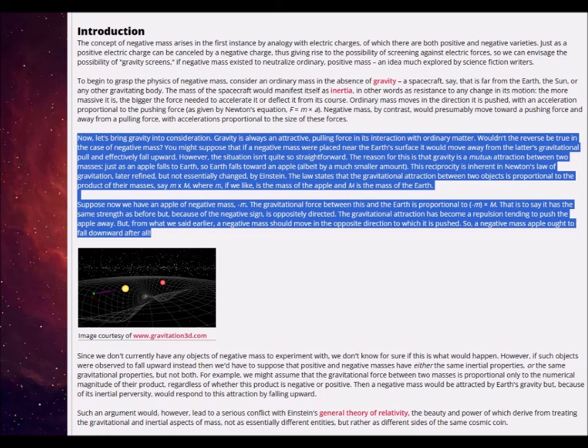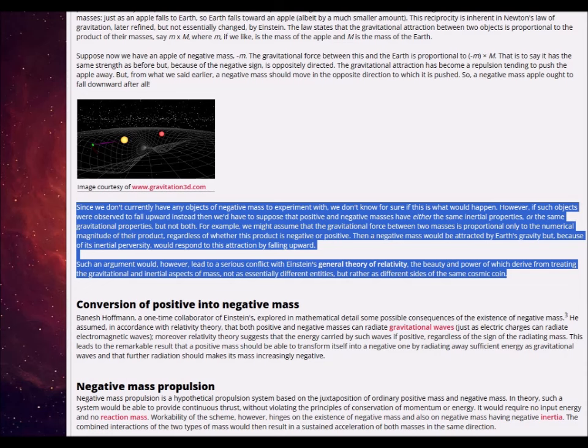Since we don't currently have any objects of negative mass to experiment with, we don't know for sure if this will happen. However, if such objects were observed to fall upward, we would have to suppose that positive and negative masses have either the same inertial properties or the same gravitational properties — but not both. For example, if the gravitational force between two masses is proportional only to the numerical magnitude of their product regardless of sign, then a negative mass would be attracted by earth's gravity but — because of its inertial perversity — would respond to this attraction by falling upward, moving away from the downward gravitational pulling force.